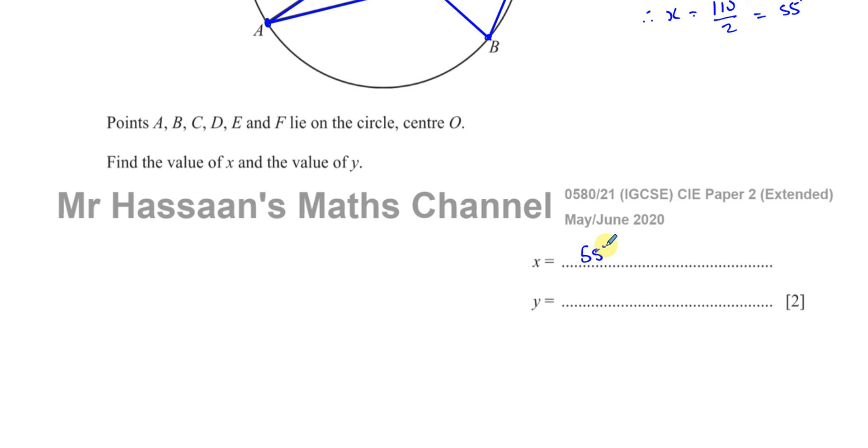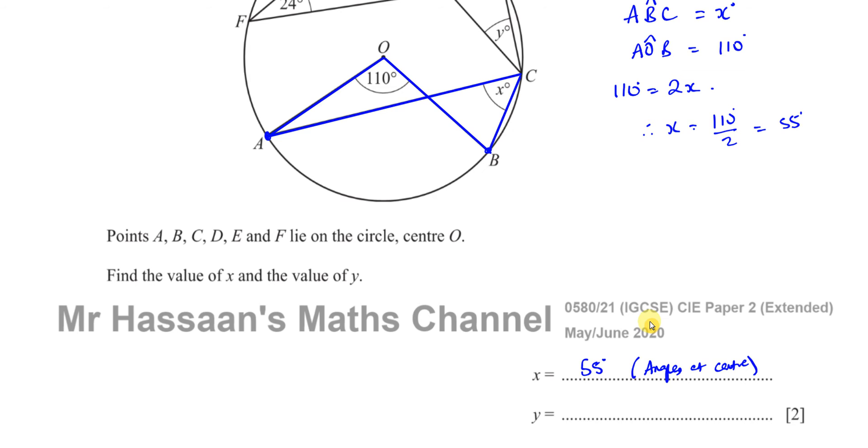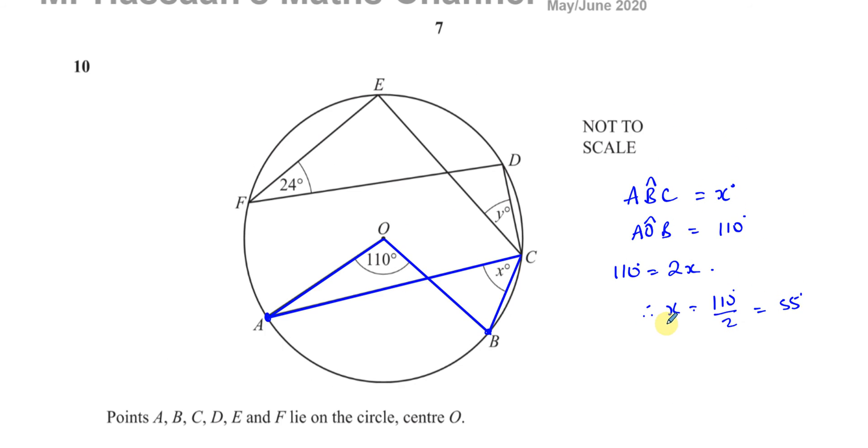They didn't ask us to give a reason. We've kind of given it there. But we can say, the way that they normally say the angles, if you just say angles at center, they understand exactly what you mean. But you don't have to give a reason. But if they did, which sometimes they do, if you just put in brackets angles at center or angle at center is twice angle at circumference, something like that, that would be fine as your reason.